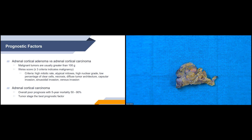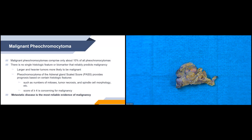Adrenal cortical carcinomas overall have a very poor prognosis. The five-year mortality is about 50% to 90%, and tumor stage is the best prognostic factor — a worse tumor stage means a worse prognosis. For malignant pheochromocytomas, malignant ones only comprise about 10% of all pheochromocytomas. There's no single histologic feature or biomarker that reliably predicts malignancy. Larger and heavier tumors are more likely to be malignant. The PASS score provides prognosis based on histologic features including number of mitoses, tumor necrosis, and spindle cell morphology. A score of four or more is concerning for malignancy. Metastatic disease is the most reliable evidence for malignancy.